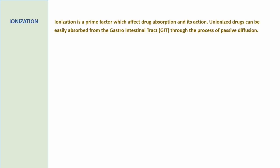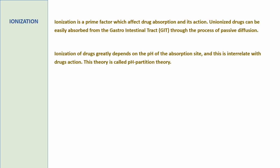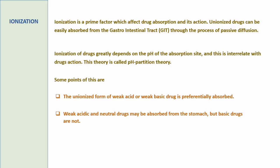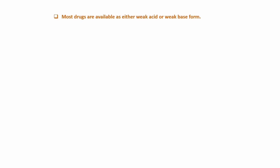सबसे पहले बात करते हैं ionization की। Drug ionization एक prime factor है जो drug के dissolution और absorption को affect करता है। Unionized drug molecules passive diffusion से gastrointestinal tract (GIT) से आसानी से absorb होते हैं। Drug का ionization काफी हद तक depend करता है absorption site के pH पर — इसे pH partition theory से समझा जा सकता है। इस theory के मुख्य points हैं: unionized form of weak acidic और weak basic drugs ज्यादा आसानी से और rapidly absorb होती हैं। Weak acidic और neutral drugs stomach से absorb होती हैं, intestine से नहीं या very less। Weak basic drugs mainly intestine से absorb होती हैं, stomach से बहुत कम। Most drugs या तो weak acidic या weak basic होती हैं।